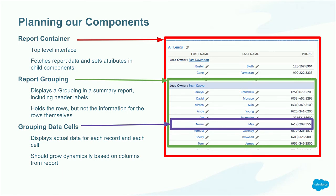Knowing what the API gives me, now I need to plan our components. Outlined in red is the top layer — the report container. This holds the report itself and is in charge of fetching the report data from the API and passing information down to child components. That container will hold a report grouping, which displays each grouping from the summary report including header labels and values. The last component is the grouping data cells — these display the actual data for each record within each grouping, and they grow dynamically based on the number of columns from the report.